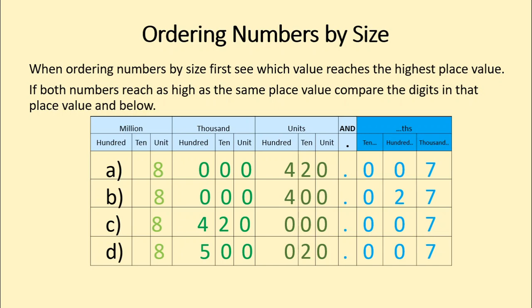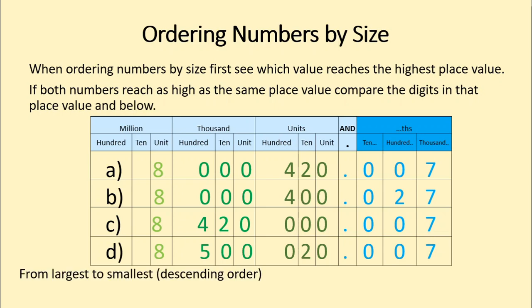Here we've got four different numbers, and they all reach the same highest place value — they all have digits in the millions, and in fact they all have the same digit: eight in the millions. So let's go down and compare the next place value, the hundreds of thousands. For A, we've got zero. For B, zero as well. For C, a four. And for D, a five. So I already know D is the biggest number. D is 8,500,020 and 7 thousandths.